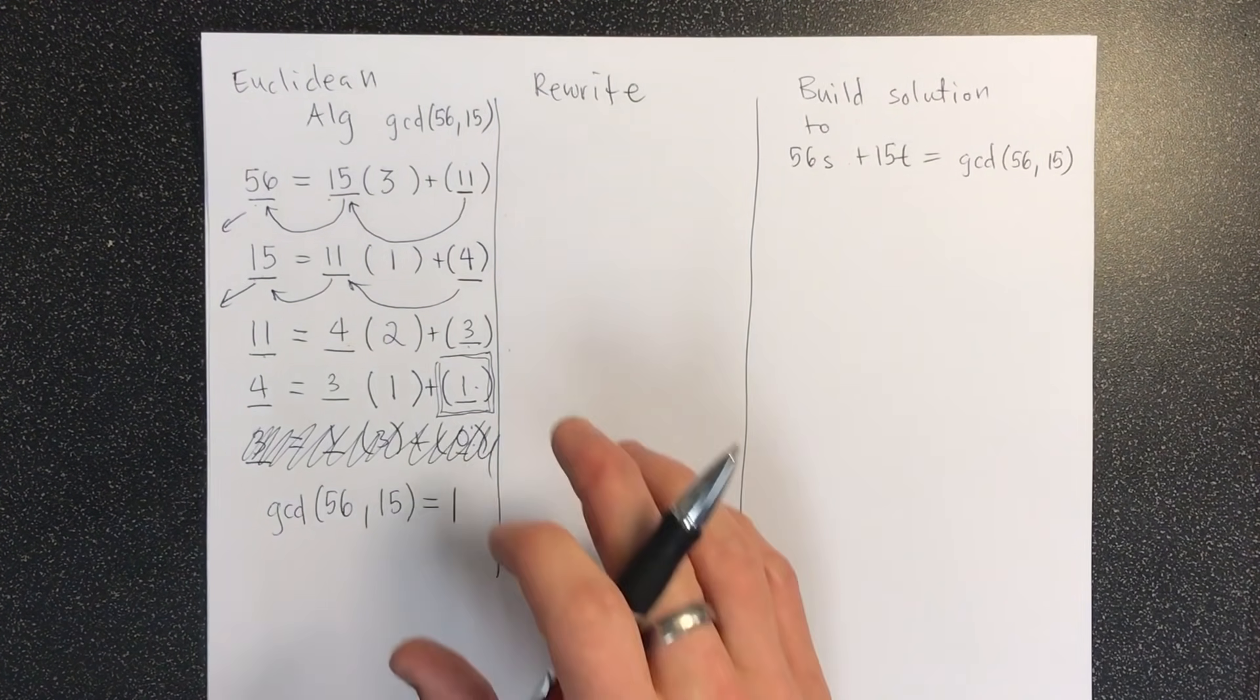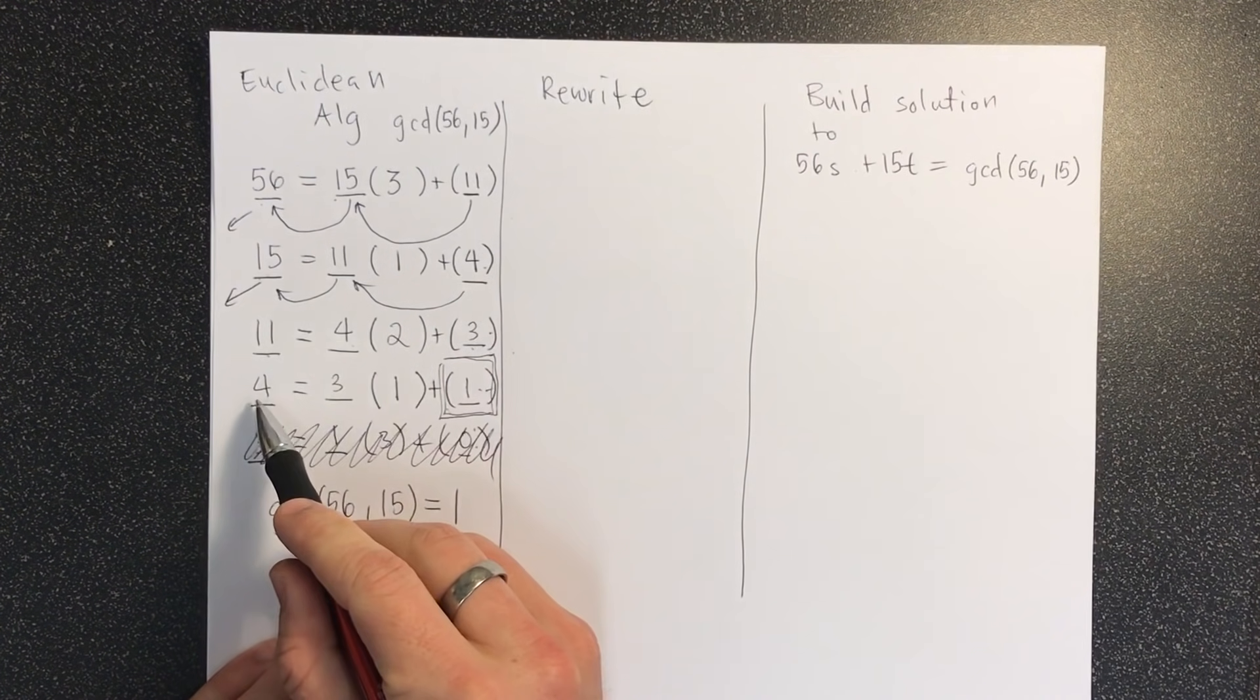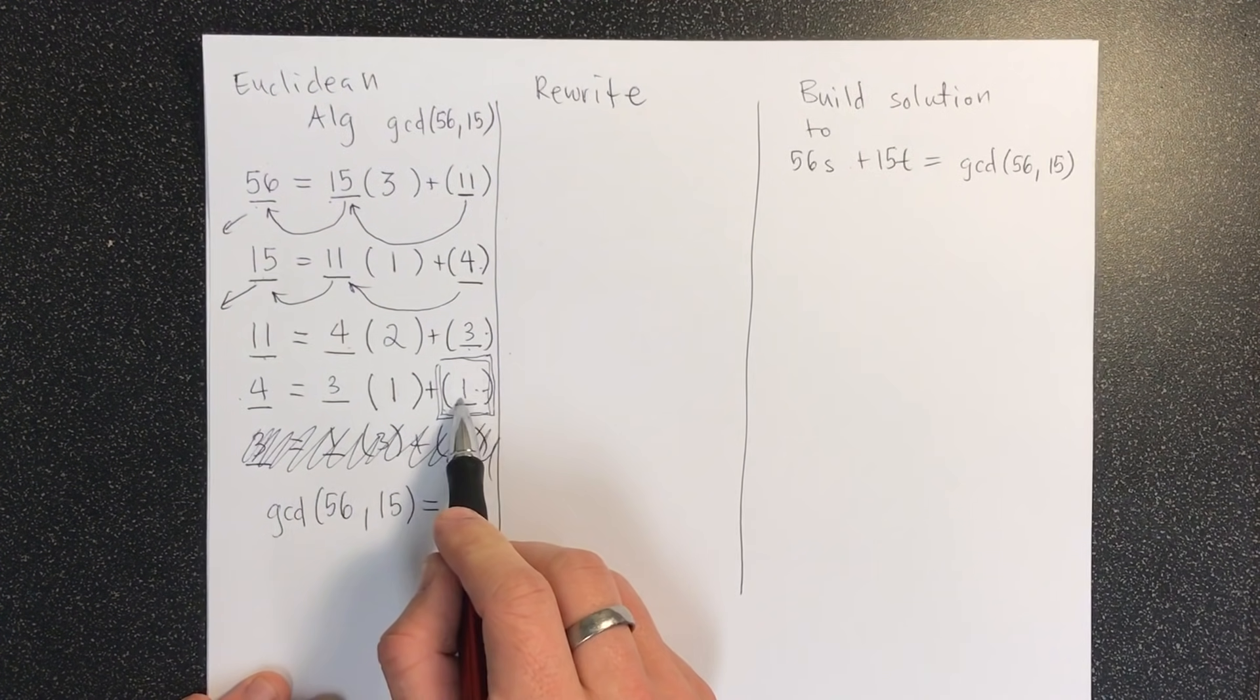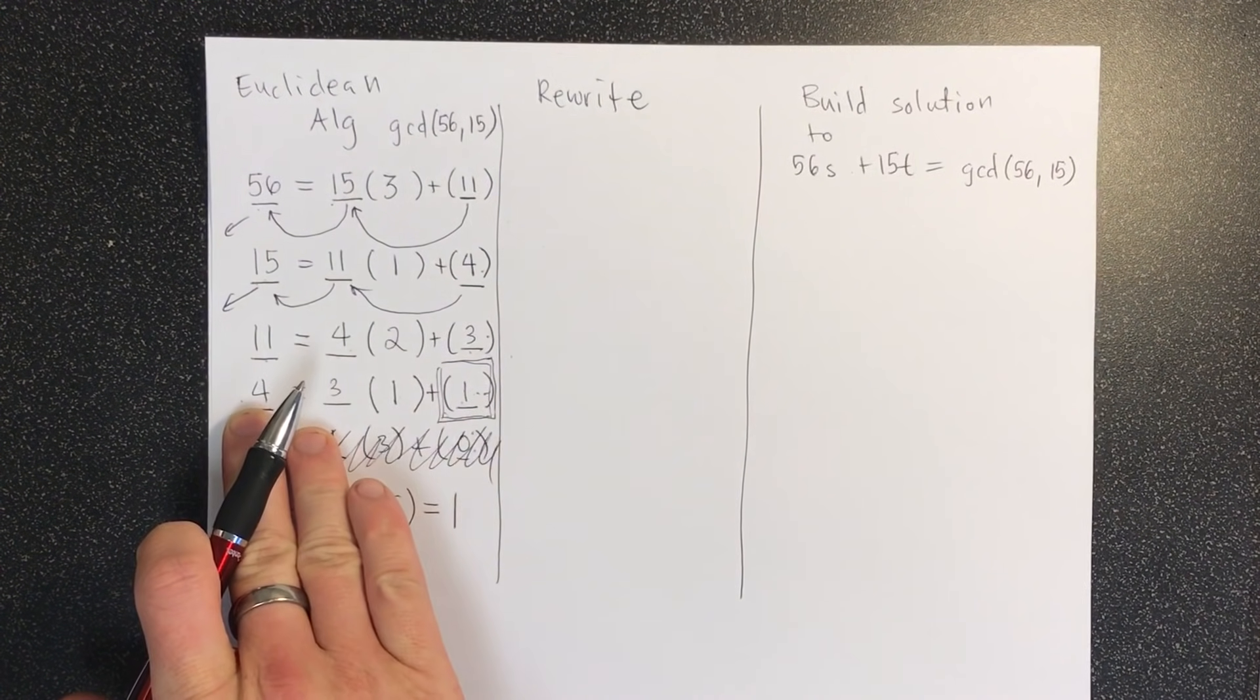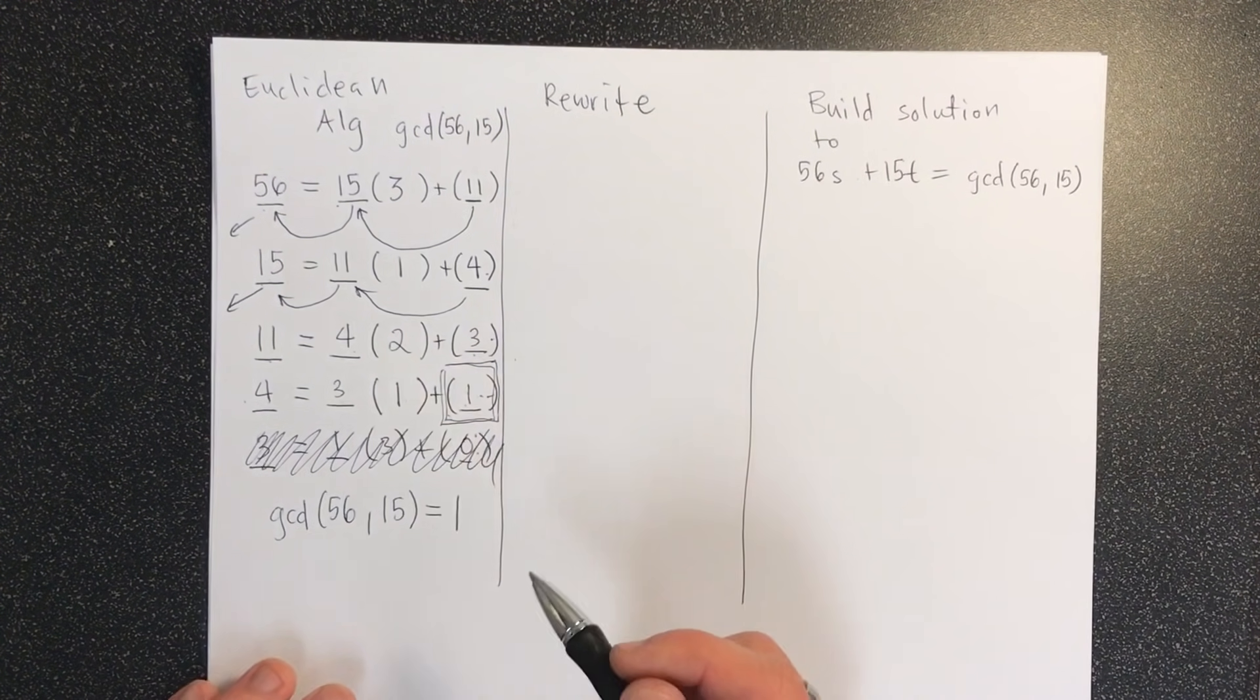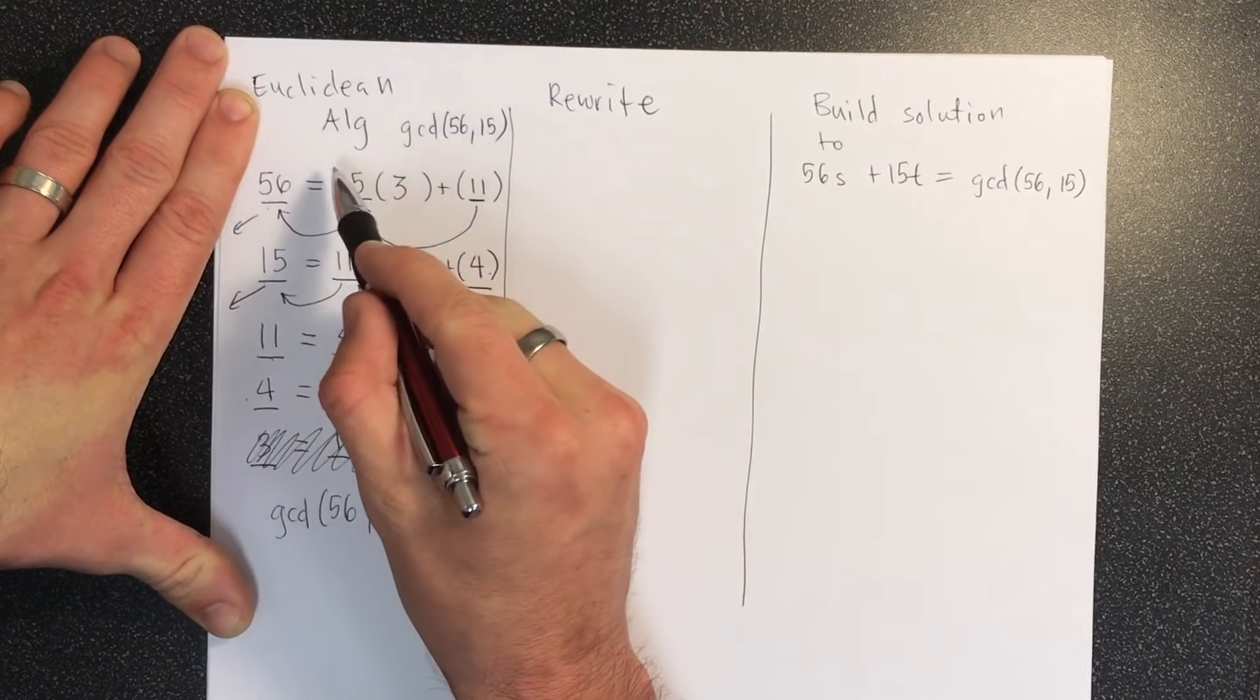But now what we want to do is rewrite every single line here in terms of the remainder. So right now they're written like 4 is equal to 3 times 1 plus a remainder of 1. What we want to write it as is 1 is equal to 4, and then to move that onto the other side by algebra I have to subtract, right? So it's going to be 4 minus 3 times 1. And so if you think about it, one way to do this really quickly is to write out the same equations here, but we're going to leave off the equals and plus for a second.